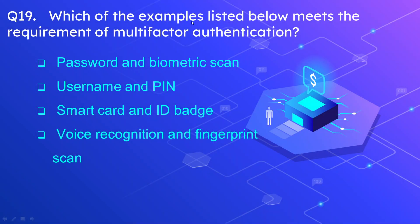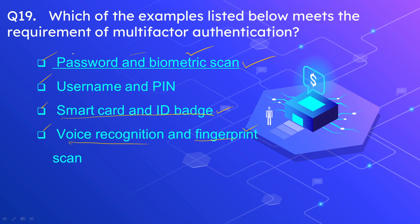Question number 19: Which of the examples listed below meets the requirement of multi-factor authentication? Options are: password and biometric scan, username and PIN, smart card and ID badge, and voice recognition and fingerprint scan. The correct option is password and biometric scan. The other options each use two methods from the same category — smart card and ID badge are both physical identification, while voice recognition and fingerprint are both biometric. Password and biometric scan is a true multi-factor authentication system, mixing knowledge-based and biometric factors.